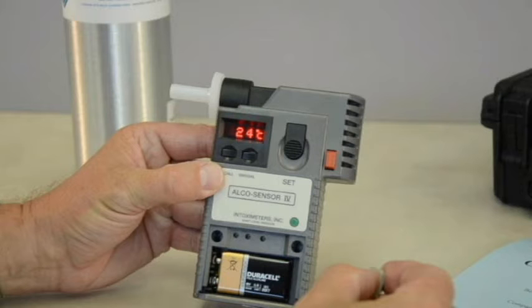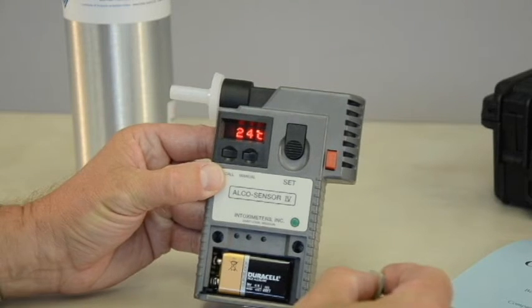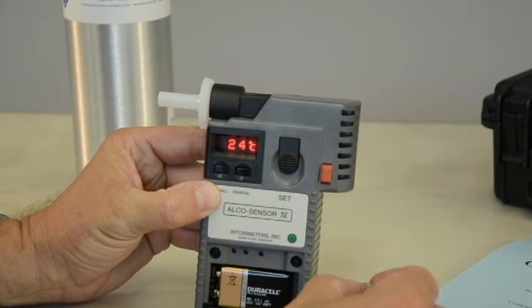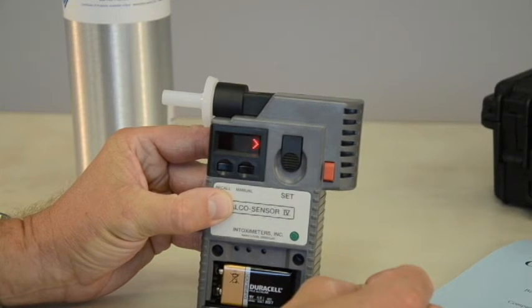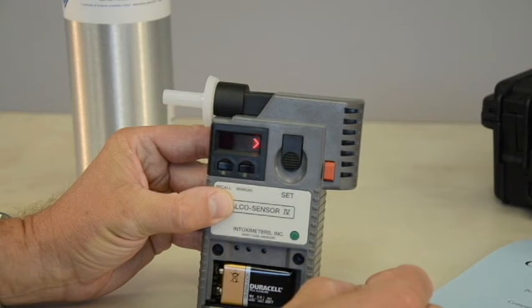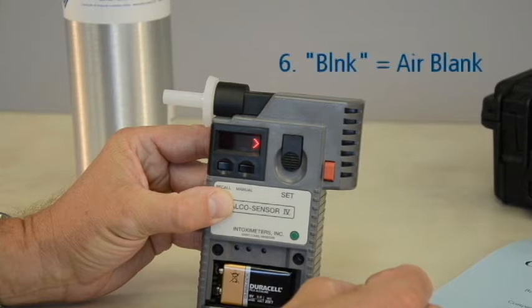The temperature will display. The temperature must be between 23 and 27 degrees Celsius. The display will then flash the back and forth arrow signs. Next,